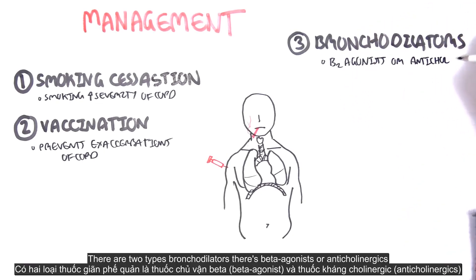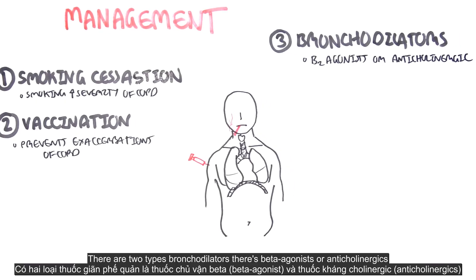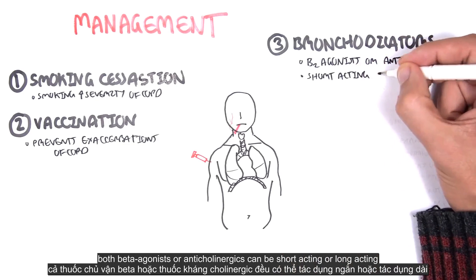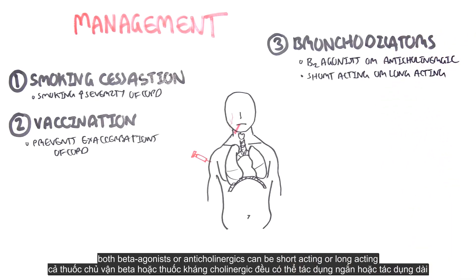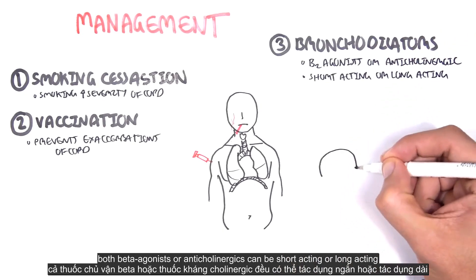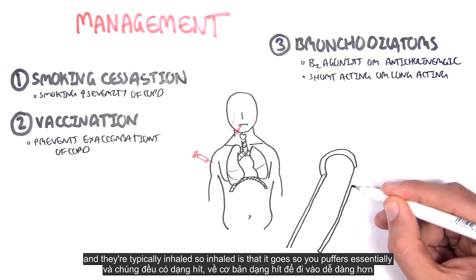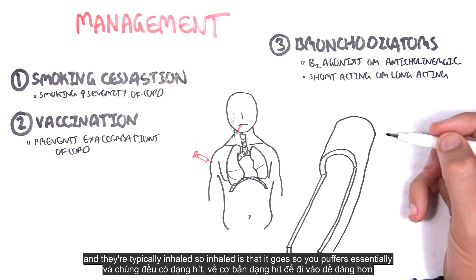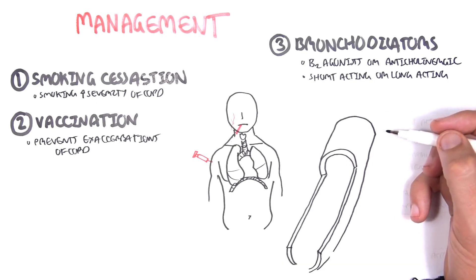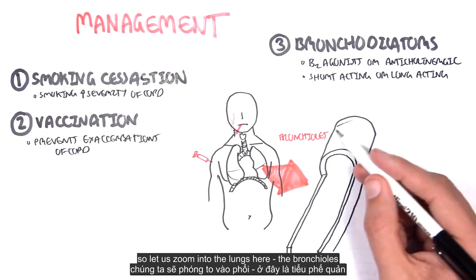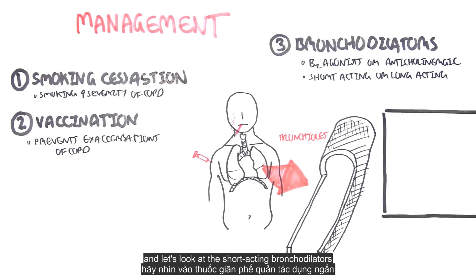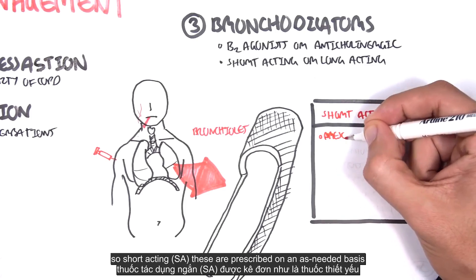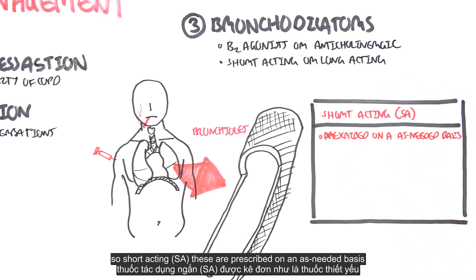There are two types of bronchodilators: beta-2 agonists and anticholinergics. Both can be short acting or long acting, and they are typically inhaled — essentially puffers. Short-acting bronchodilators are prescribed on an as-needed basis.